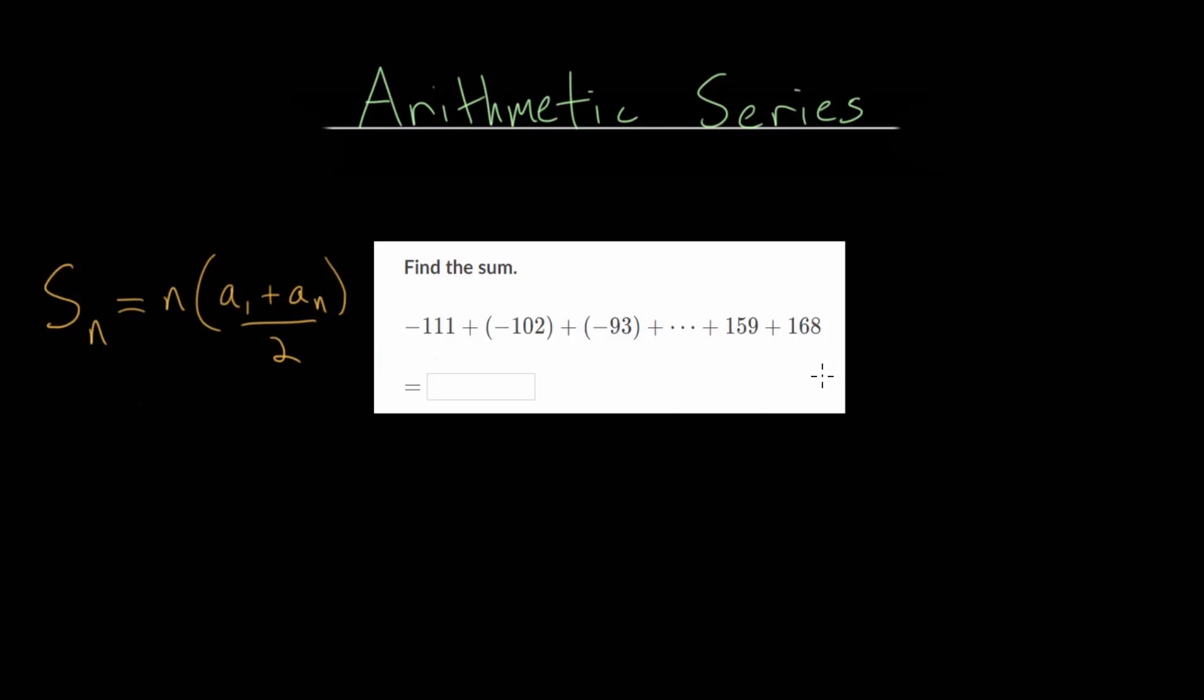Going to our specific example problem, we do know the first term, this is A sub 1, and the last term, we can call A sub n. But the tricky part of this problem is we don't know exactly how many terms there are. But we can figure that out, since the common difference, the number we're adding from one term to the next, looks to be 9. We can call that D, that is our common difference.